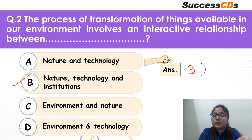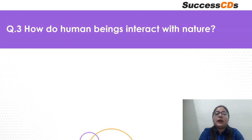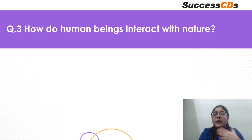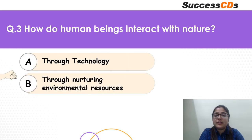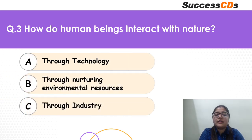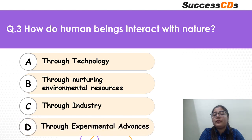If you have any doubts please post them in the comment section — we'll take it up. Coming to question 3: how do human beings interact with nature? Is it through technology? Is it through nurturing environmental resources? Is it through industry? Or is it through experimental advances?